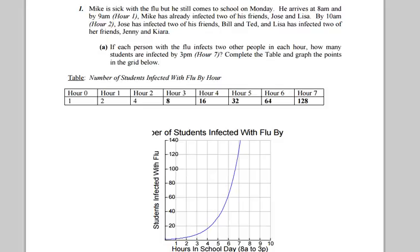The table here is representing how many new people are infected every hour. So obviously if every person infects two other people, then the number of people infected every hour is going to increase by a factor of two. So we started with Mike here, infected his two friends, then they infected their two friends.